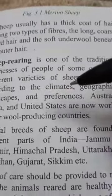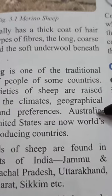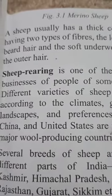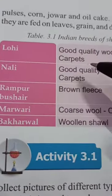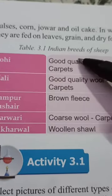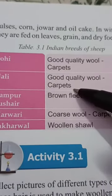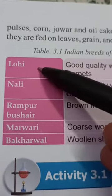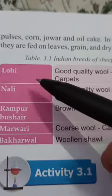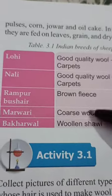All over the world, Australia, China and United States are the main producers of wool. India also has different breeds of sheep, given in a table, which lists the names of different breeds and what quality wool we get from each of those sheep.